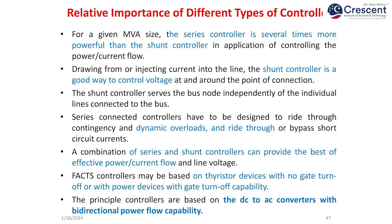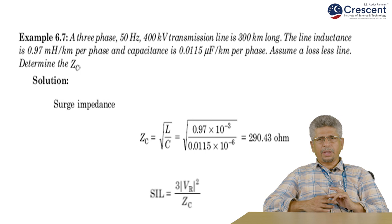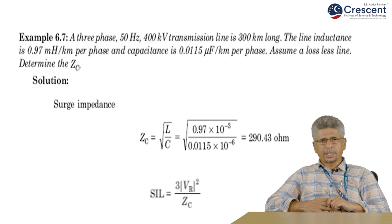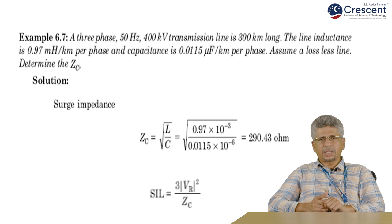Surge impedance loading: a transmission line is loaded by being terminated with an impedance equal to its characteristic impedance. The receiving-end current is given by IR = VR/ZC. For a lossless line, ZC (characteristic impedance) is purely resistive. Surge impedance loading (SIL) of a transmission line is defined as the power delivered by the line to a purely resistive load equal in value to the surge impedance of the line. SIL = 3VR²/ZC. Since VR = VL(rated)/√3, SIL becomes SIL = VL(rated)²/ZC. Given L and C per unit length, the formula for SIL can be used to calculate SIL.